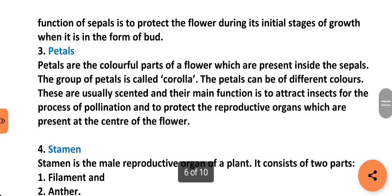Next part is petals. Petals are the colorful parts of a flower which are present inside the sepals. The group of petals is called corolla. The petals can be of different colors. They are usually scented and their main function is to attract insects for the process of pollination and to protect the reproductive organs present at the center of the flower.